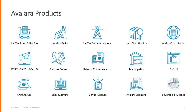Number one is our flagship product, AvaTax Sales and Use Tax, which helps you calculate sales tax accurately based on your state and country — and I say country because we are worldwide, not just the US. Number two, if you deal with excise duty, import taxes, and similar, we have AvaTax Excise, which has special tax codes and rules. If you're in streaming or communications — like T-Mobile or any communications domain — we have AvaTax Communications to handle that integration.